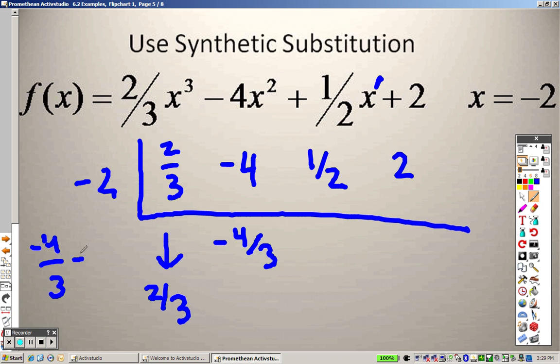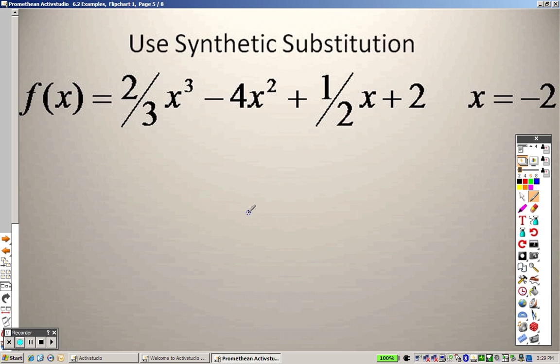Negative 4 thirds plus negative 4 over 1. If I find a common denominator, that's like saying 3 over, or sorry, negative 12 over 3. So you actually end up with negative 16 over 3. Then I multiply those to get positive 32 over 3. And I need to add those together. And I guess I just erased the whole thing. But I added those.